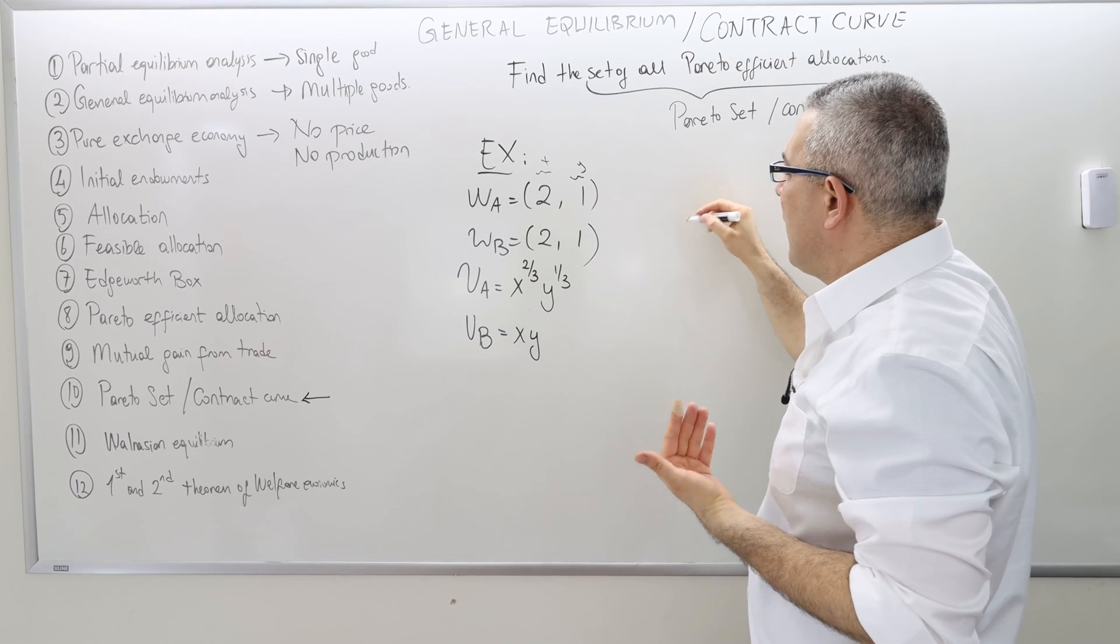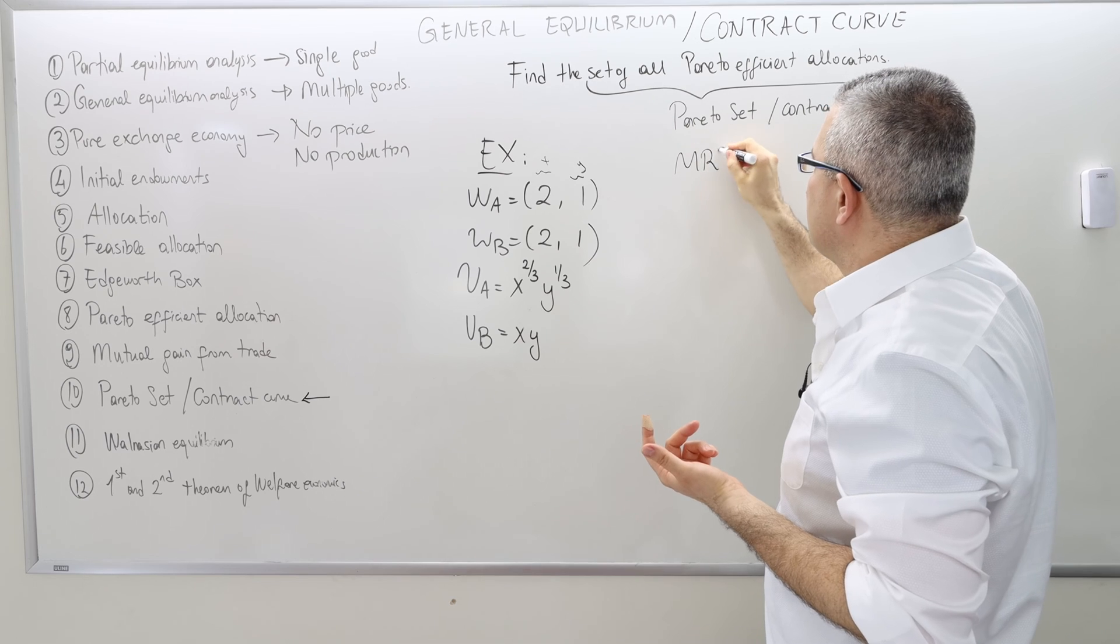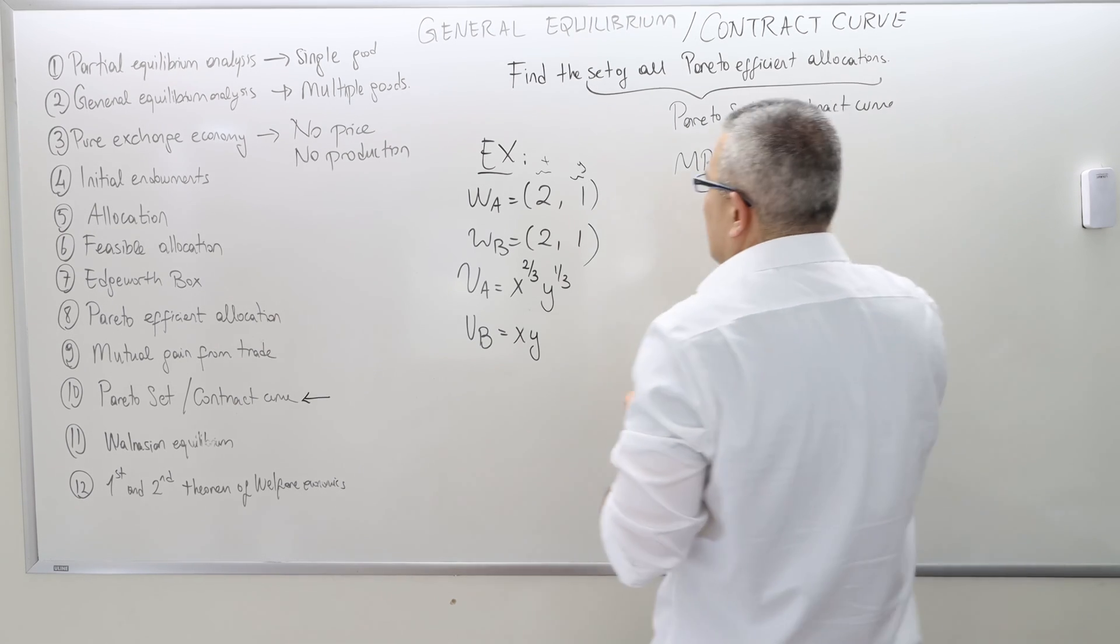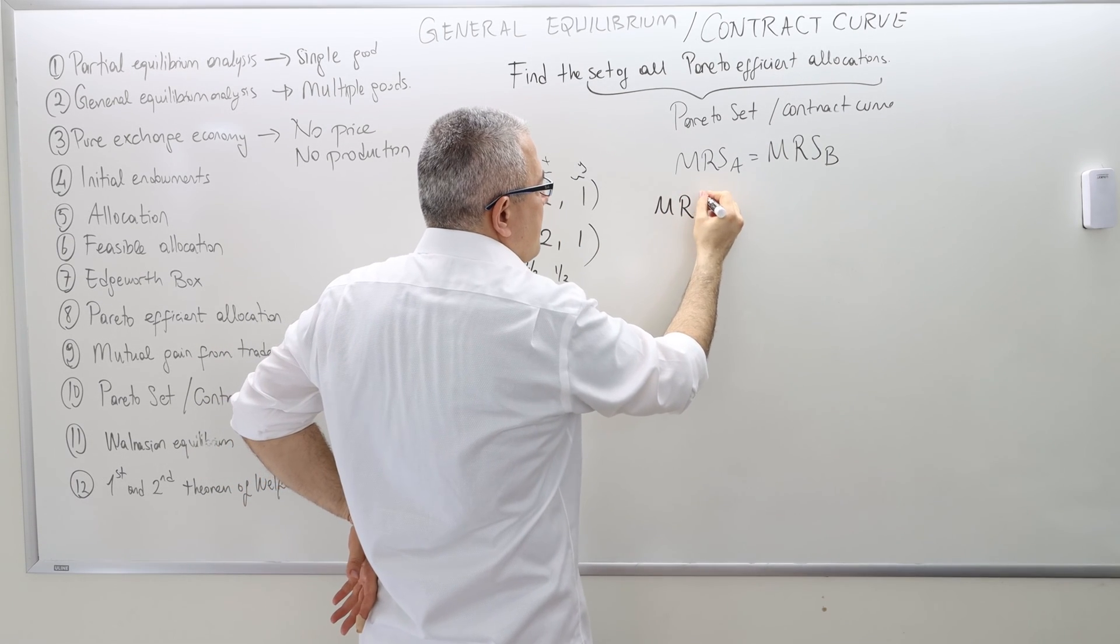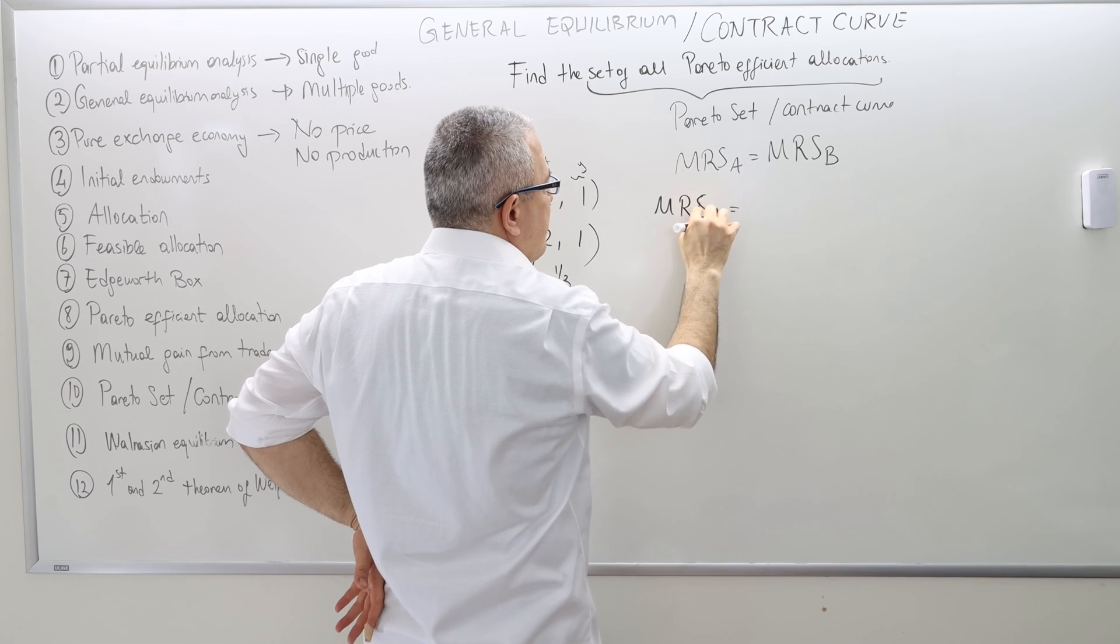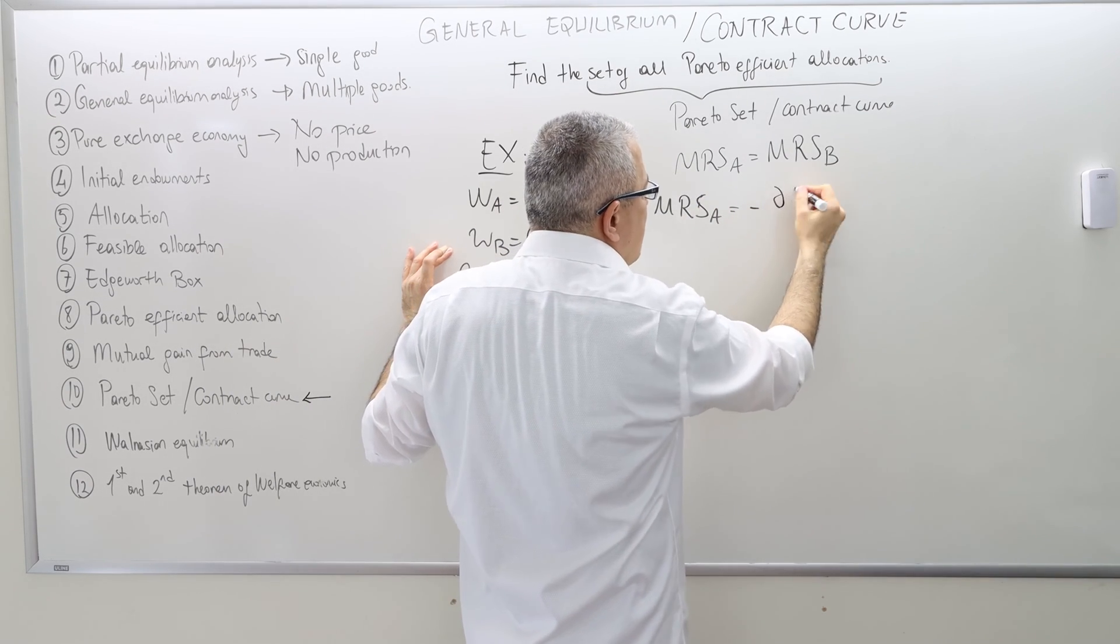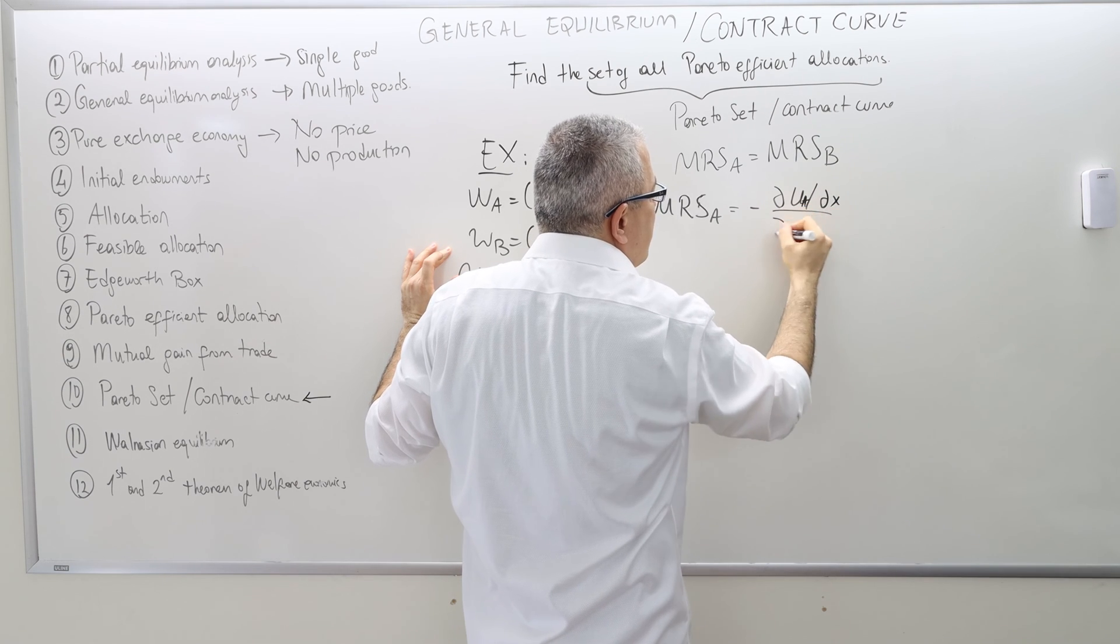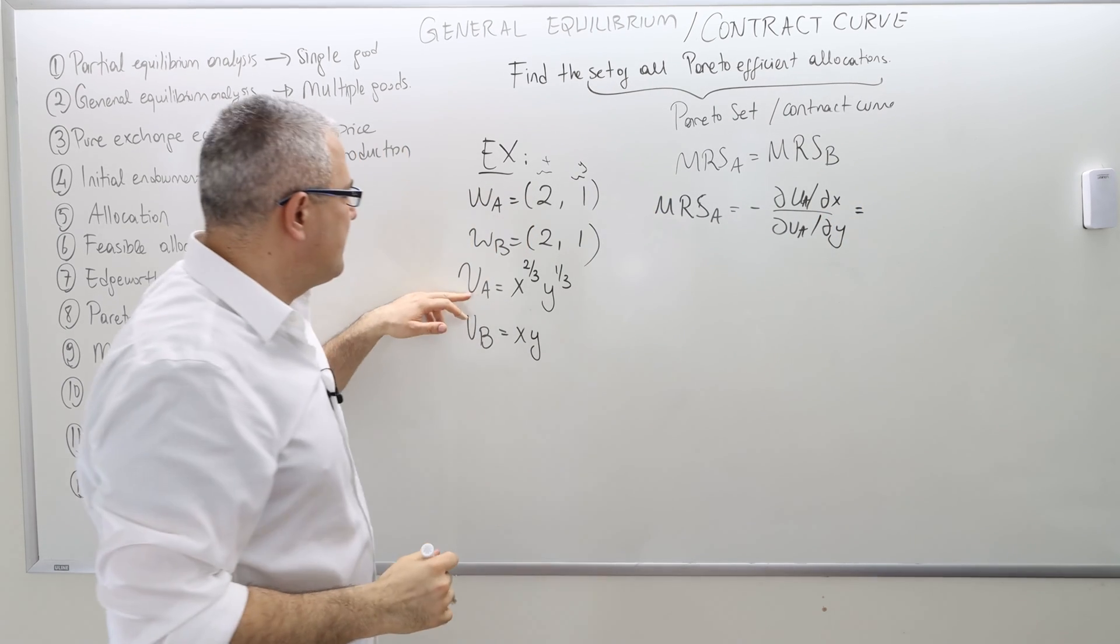So let's find that. As usual, how do we find the contract curve? The marginal rate of substitution for agent A has to be equal to marginal rate of substitution for agent B. What is marginal rate of substitution for agent A? It's minus del u of A del x, del u of A del y.